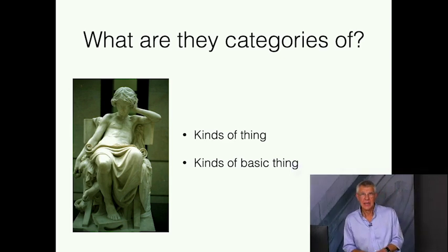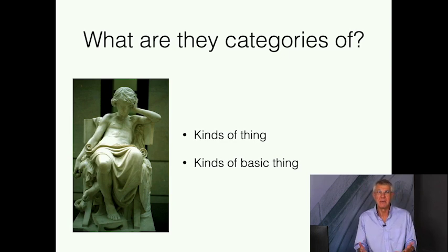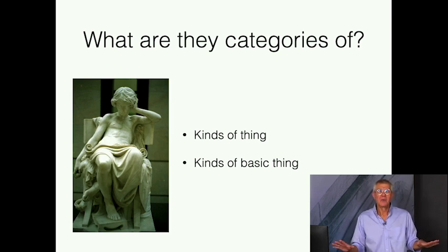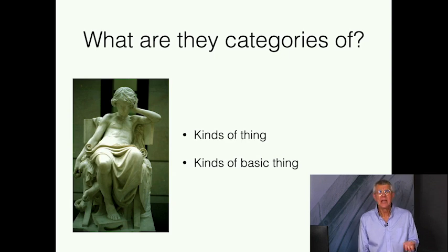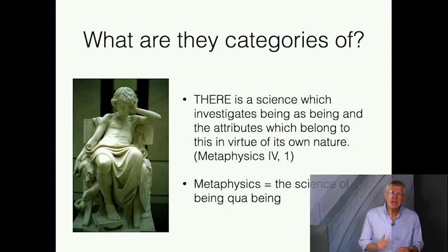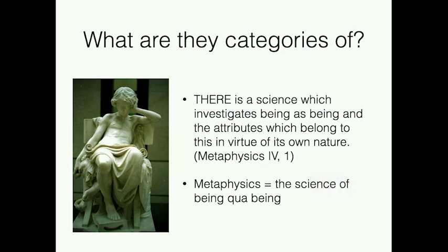Maybe it's kinds of basic thing — the most general categories of things. But again, it's odd to think of relations as things, or affections as things, or states even as things. Here is the clue he gives us, stated most clearly in the Metaphysics. He says there is a science which investigates being as being, and the attributes that belong to this in virtue of its own nature. Aristotle defines metaphysics as the science of being qua being — being as such, being as being.